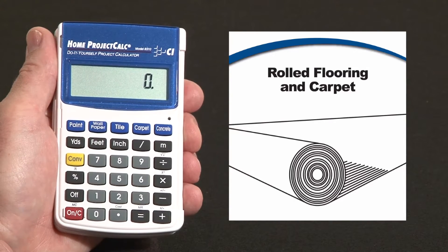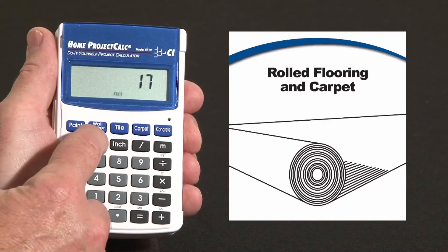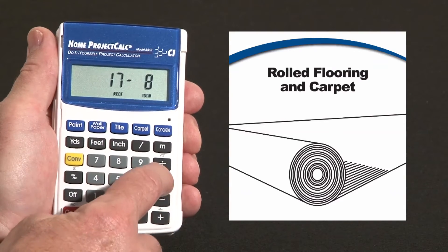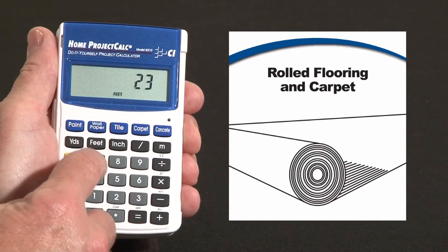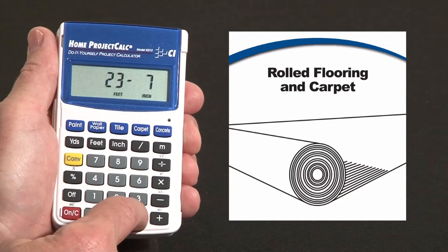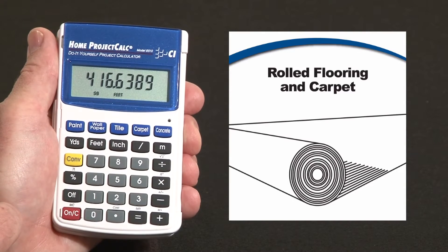So you'd start off with measuring your room. Say the room is 17 feet 8 inches by 23 feet 7 inches, which gives us our square footage of 416 square feet.